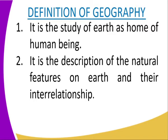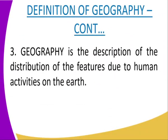The second definition is: geography is the description of the natural features on the earth and their interrelationship. We then went further and came up with a third definition: geography is the description of the distribution of features due to human activities on the earth — that is, the way human beings have influenced how natural and human features are distributed across the world.